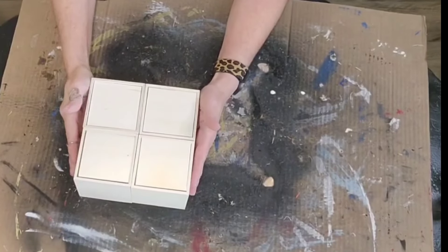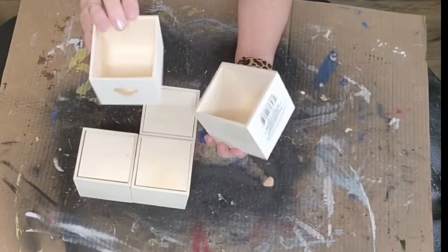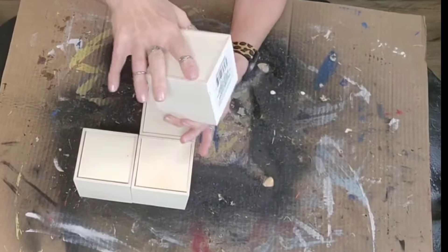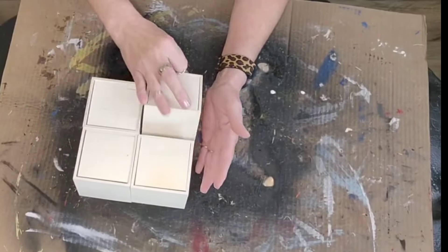So come craft with me. Dollar Tree sells these cute little wood boxes. On the outside, what is supposed to be the outside, would be a heart or butterfly.